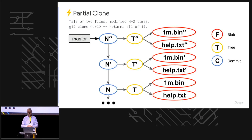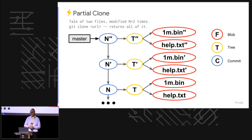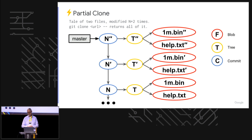If you're not familiar with the Git object hierarchy: commits have parents, shown by directed arrows. Commit n-prime-prime's parent is n-prime, going back to n. A commit also points to a tree object, and a tree object can point to other tree objects to represent subdirectories, or to actual file contents called blobs. In this case we have a 1MB binary and a help text describing the updates made to it each time.